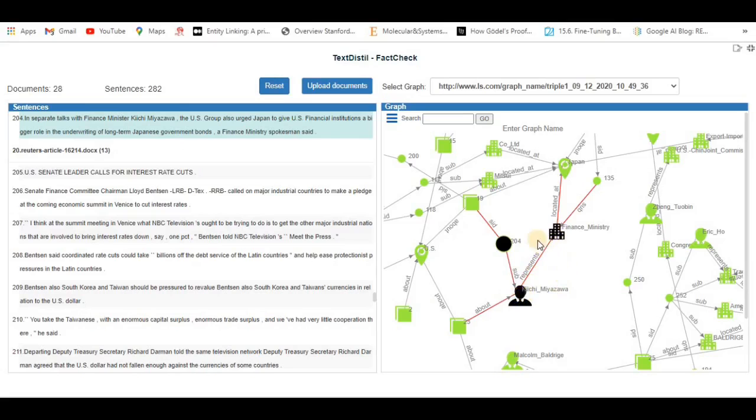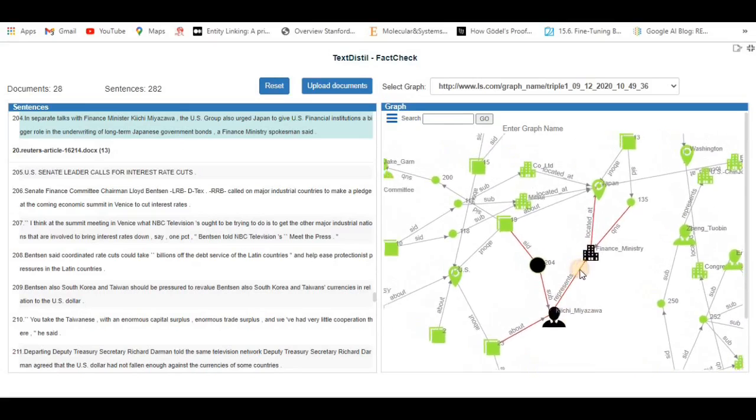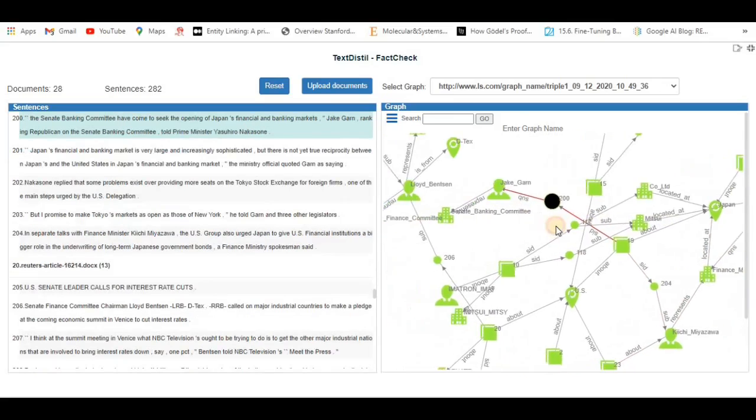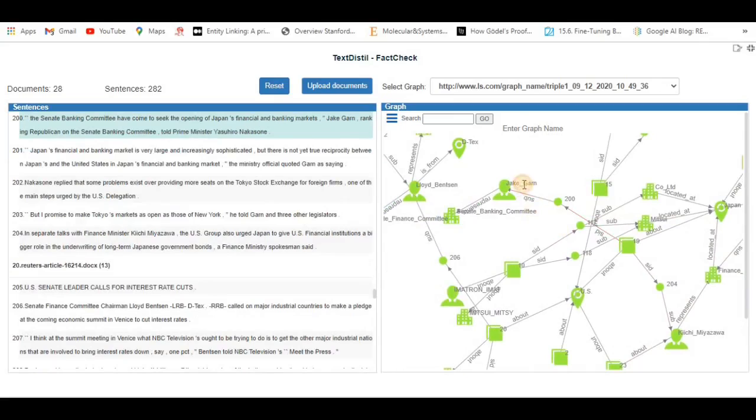We can check another right here. We have another block of text that is highlighted here. This is James J. Gamm representing Senate Banking Committee. We can see J. Gamm is in here. It is J. Gamm ranking Republican on the Senate Banking Committee. You can see that can be the basis for this triple.